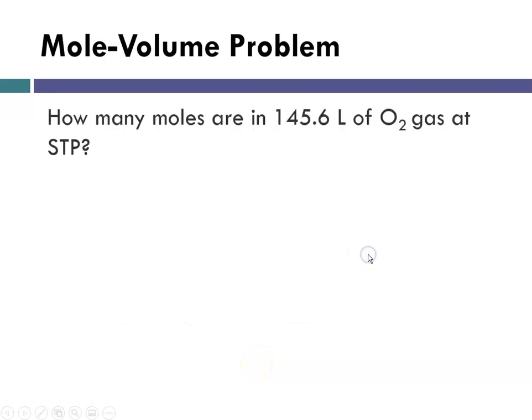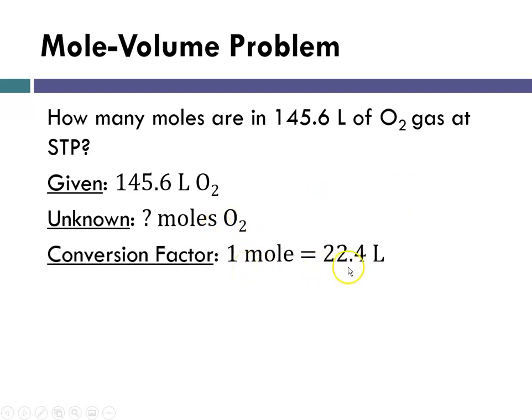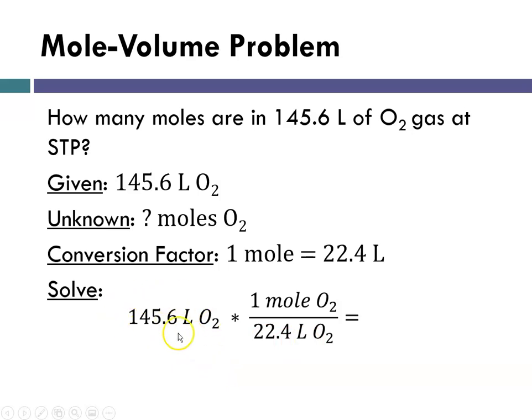So let's look at a mole volume problem. How many moles are in 145.6 liters of oxygen gas at STP? Whenever you see STP, you should immediately think, ding, ding, ding, ding, STP means one mole occupies 22.4 liters. So given 145.6 liters of oxygen, the unknown is how many moles is that? The conversion factor is, since we're at STP, one mole is 22.4 liters. So let's solve it. So when we're setting this up, you begin with the given, you multiply by your conversion factor where you set it up such that the unit you want is in the numerator, the unit that you were getting rid of is in the denominator. That way liters of oxygen cancels out.